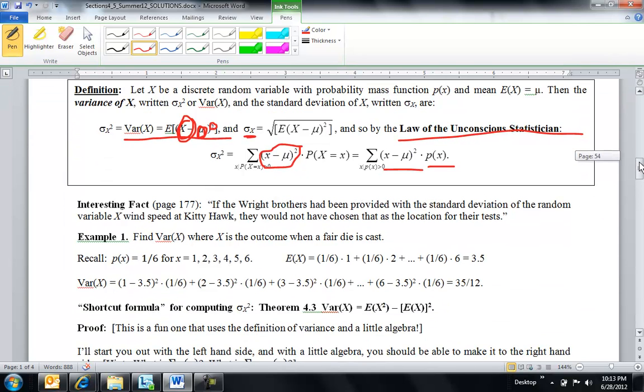And here's an example, just an interesting fact. Here's an example with rolling a die. So you can see the definition, p(x) times (x minus mu) squared, p(2), 2 minus mu squared, p(3), 3 minus mu squared.